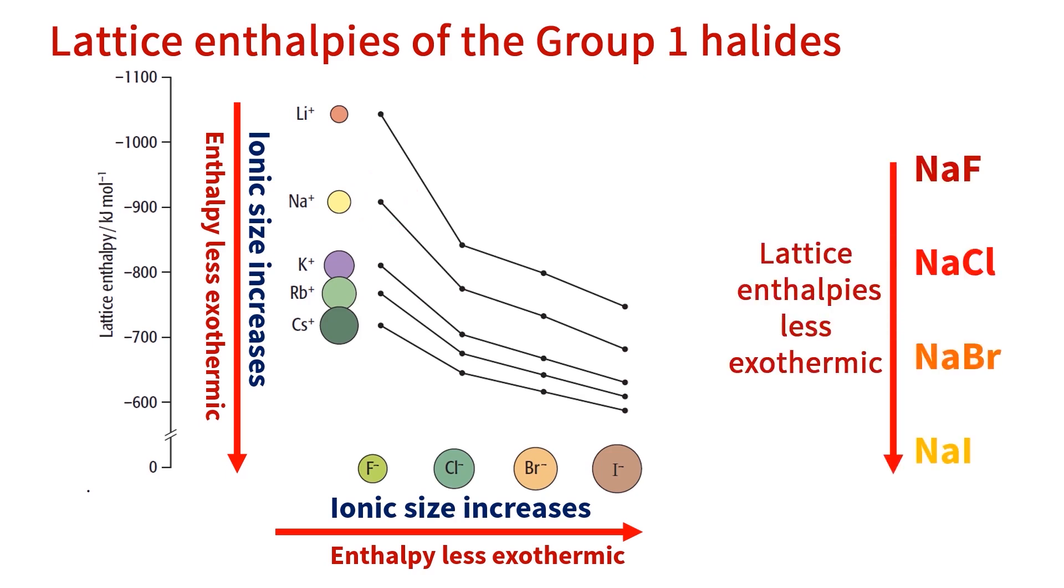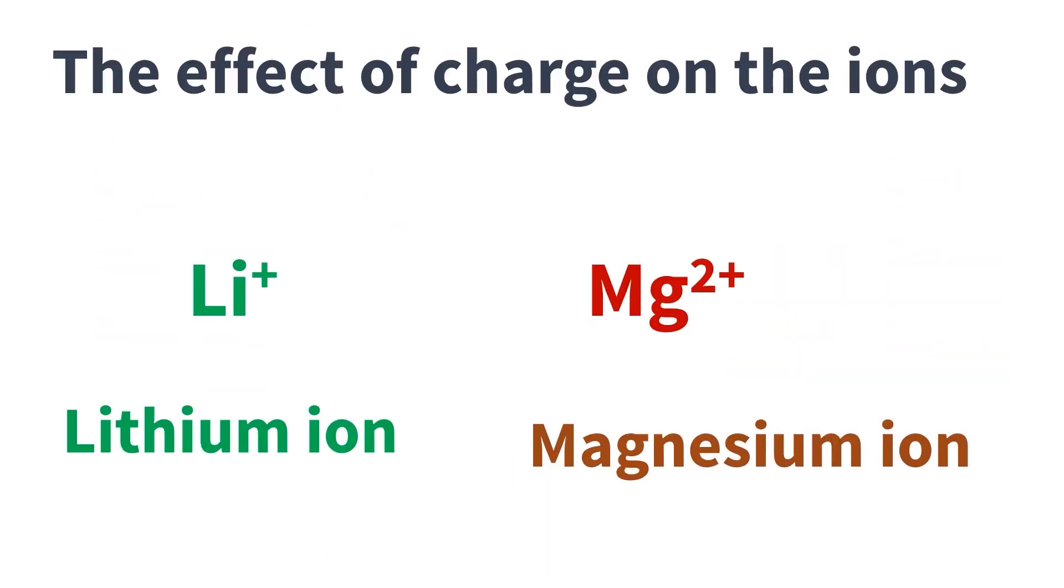Now let's move to the effect of ionic charge on the lattice energy. The lattice energy becomes more exothermic when there is more charge on the ion. Let's compare the value of lattice enthalpy of lithium ion that has only one charge and magnesium ion that has two charges on its ion.